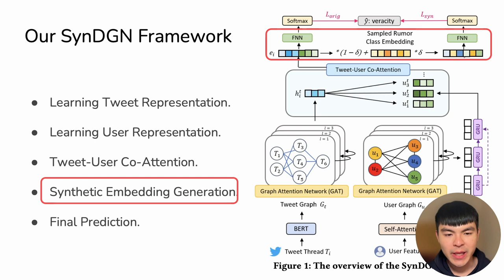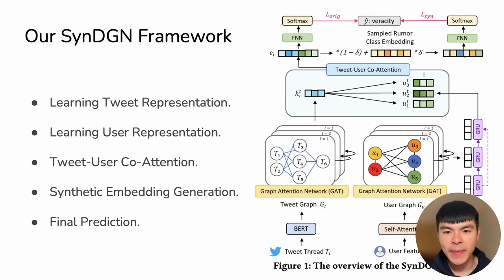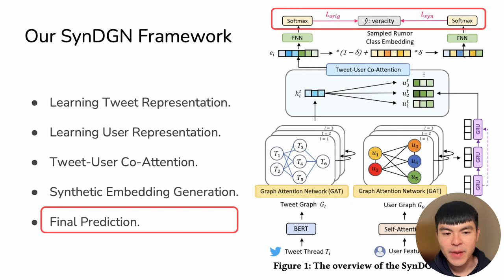Then, we do a synthetic embedding generation on the minority class to oversample the minority non-rumor class to enhance our robustness. And then, the final step is to do a final prediction, which we apply a softmax layer on the original embedding, the fused embedding, and the oversampled synthetic embedding.